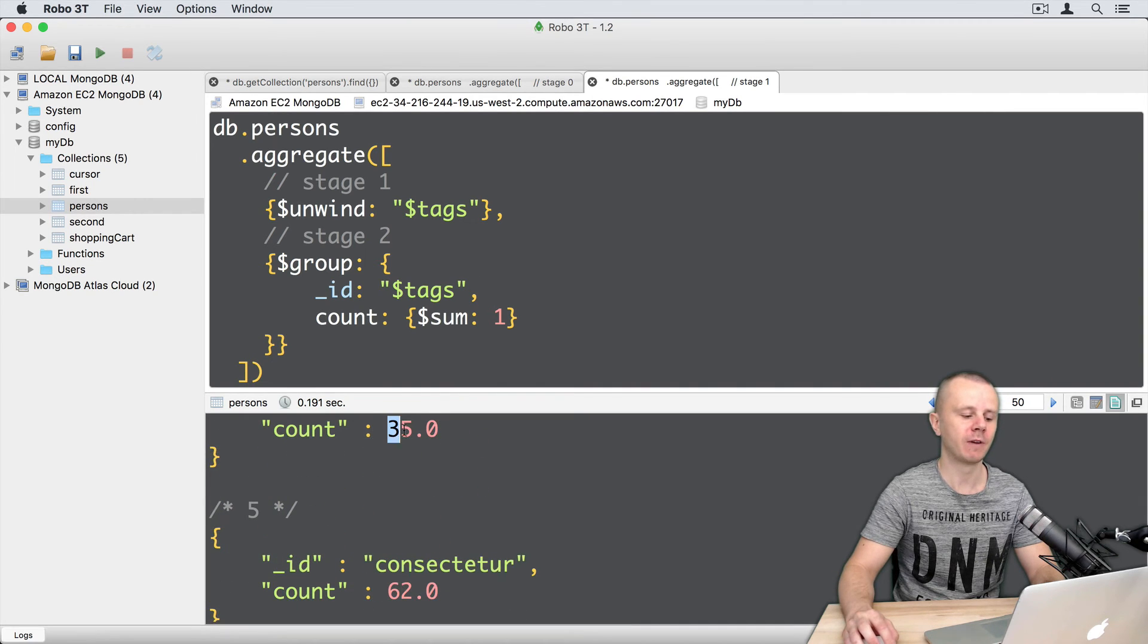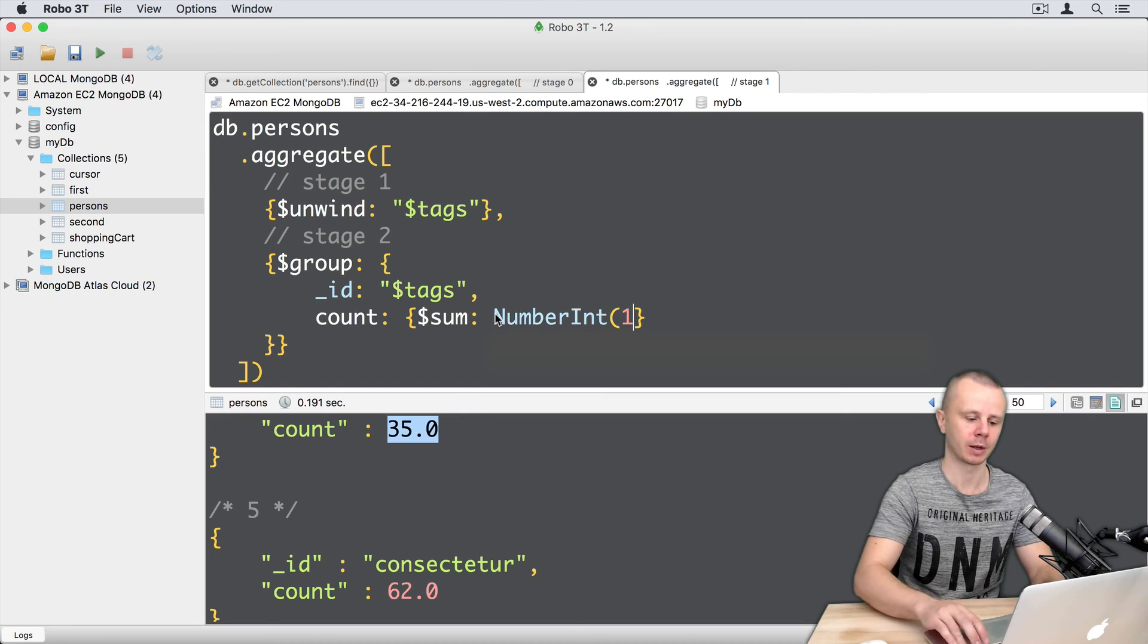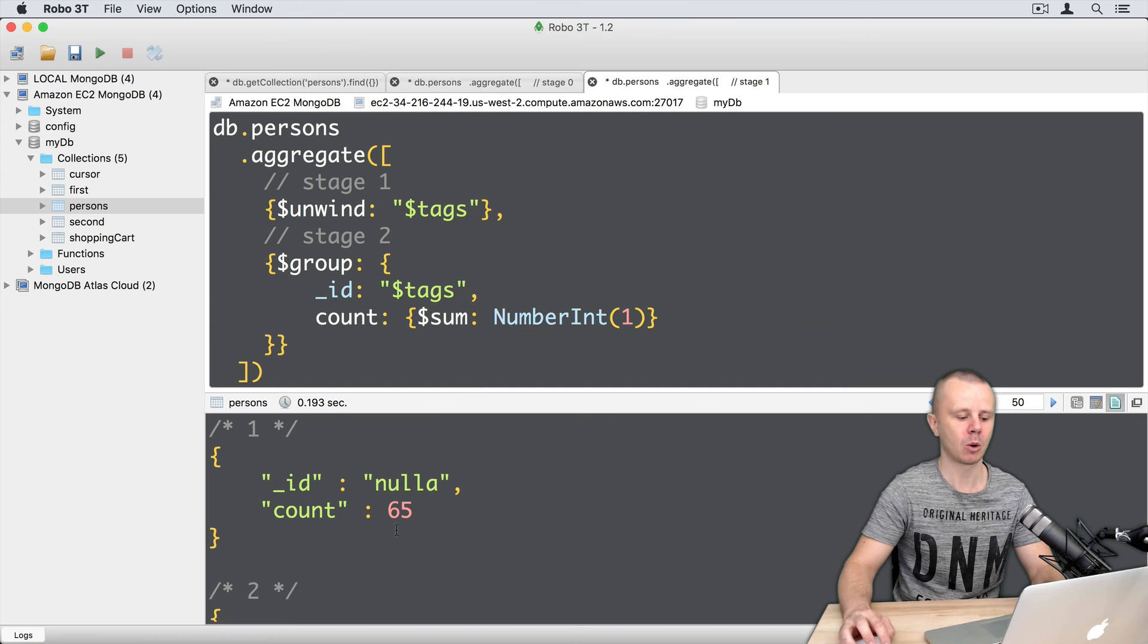You may notice that the values of the count field have double precision type. If you want to get integers, you must change here one to NumberInt one. Like this, let's execute this command. Now we got values integer 32.